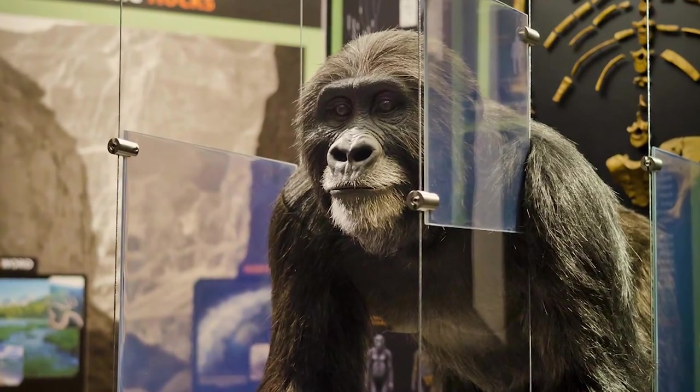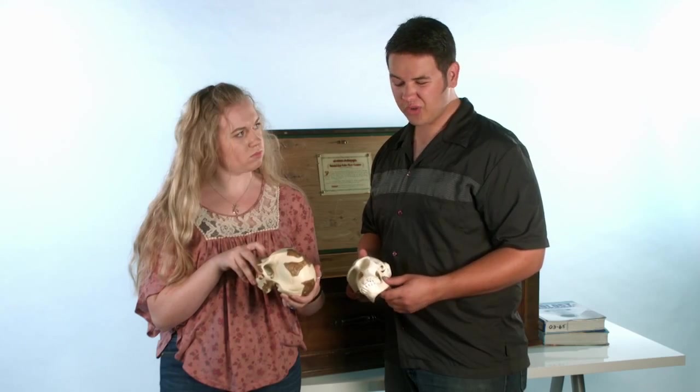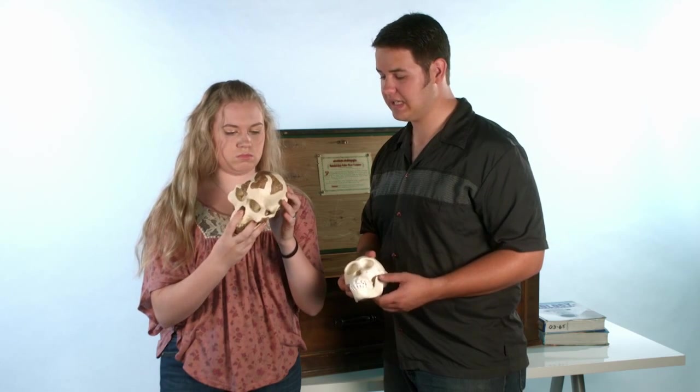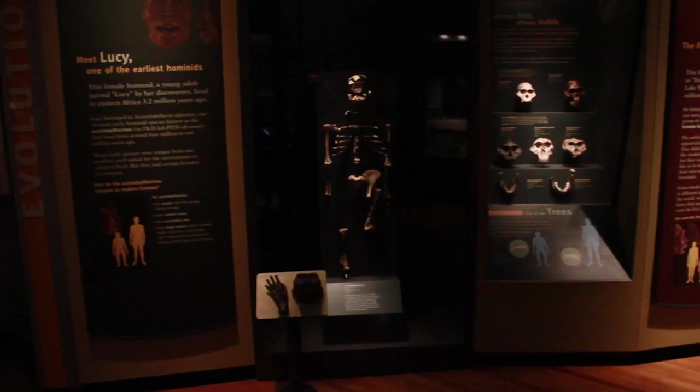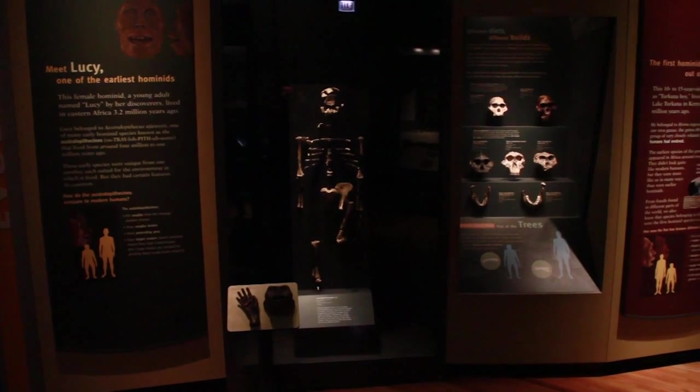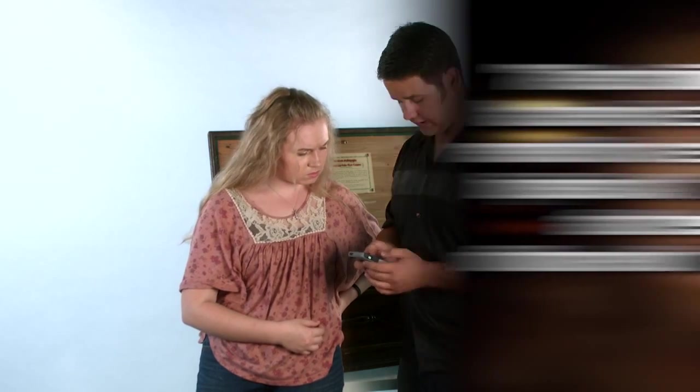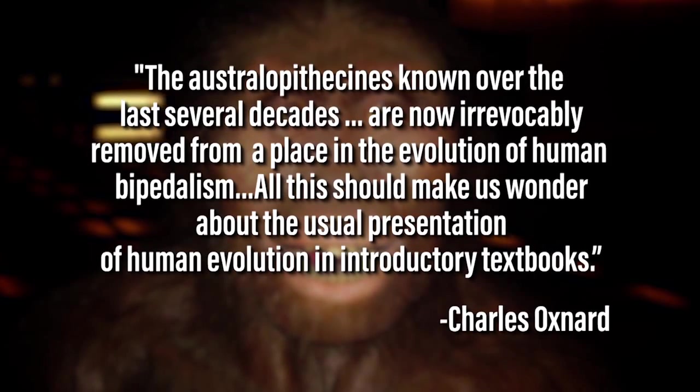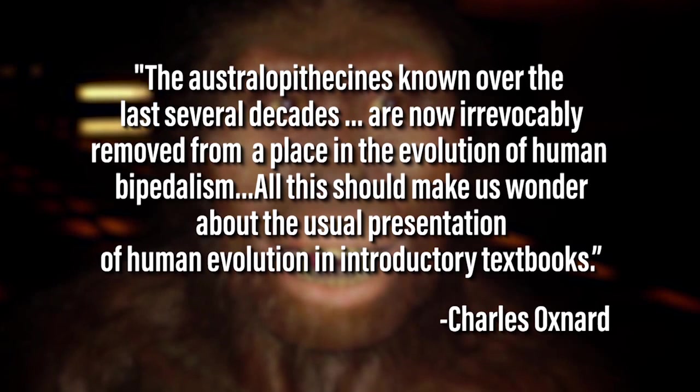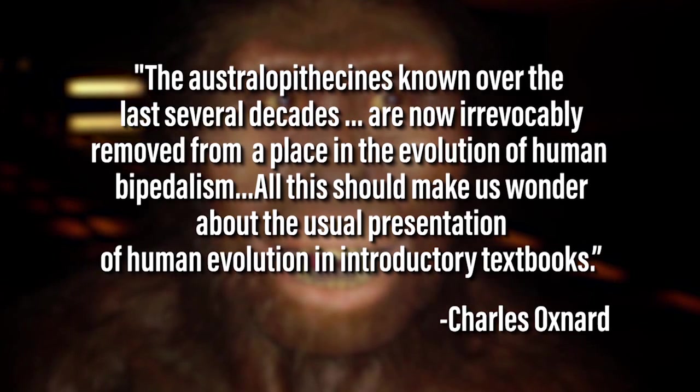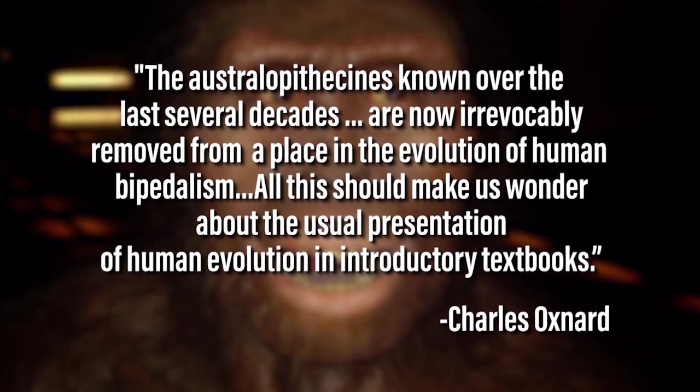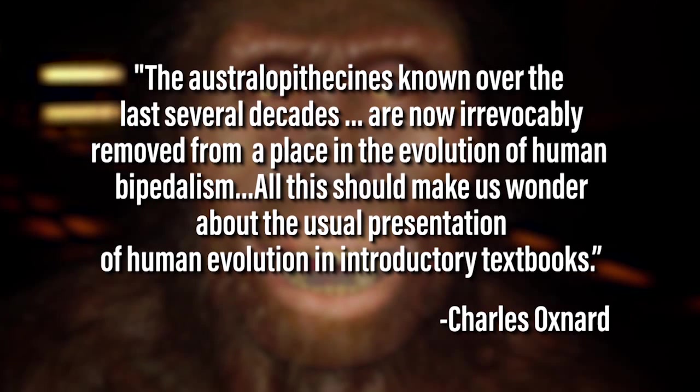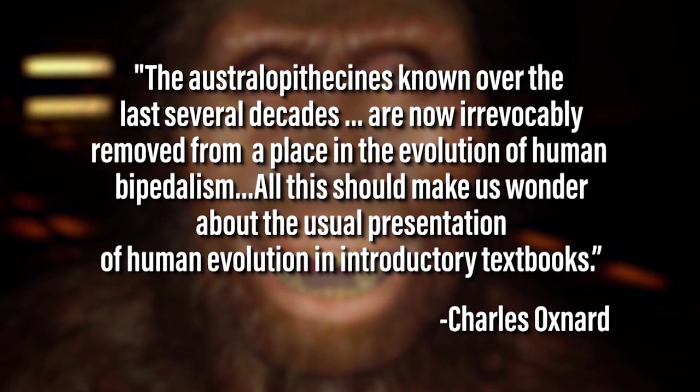Well, they do say they have found several complete skeletons of the Australopithecus, though not specifically Lucy. They found around 360, 362 actual specimens from the species Australopithecus, specifically Lucy. However, Charles Oxnard said the Australopithecines known over the last several decades are now irrevocably removed from a place in the evolution of human bipedalism. All this should make us wonder about the usual presentation of human evolution in introductory textbooks.